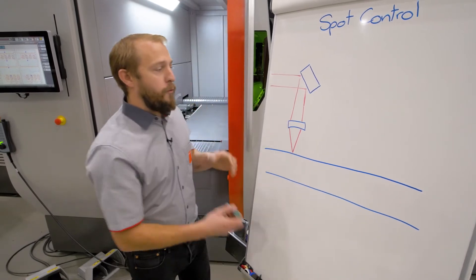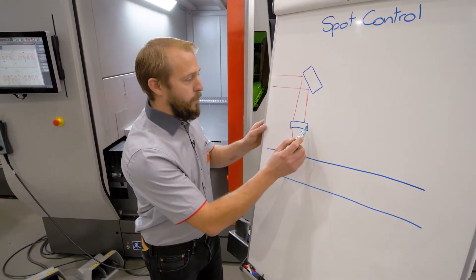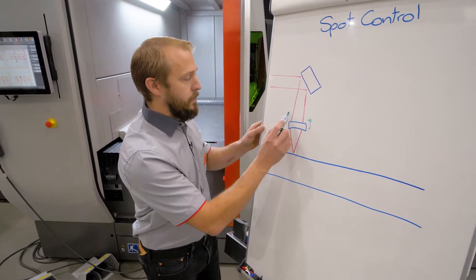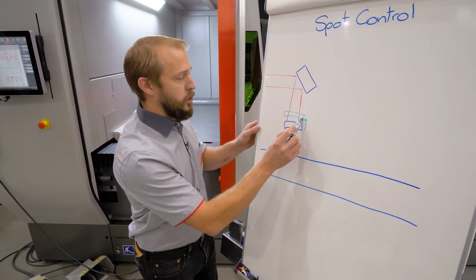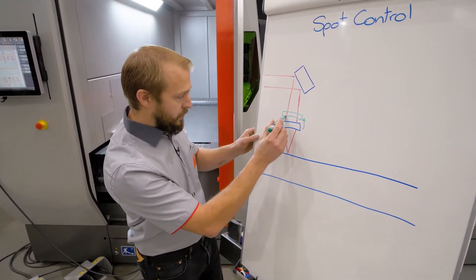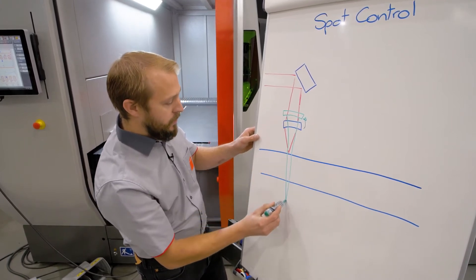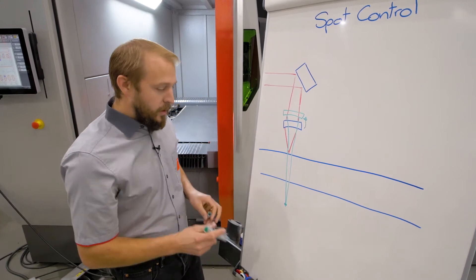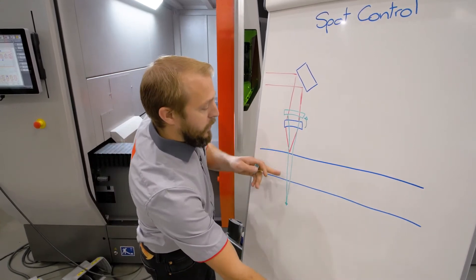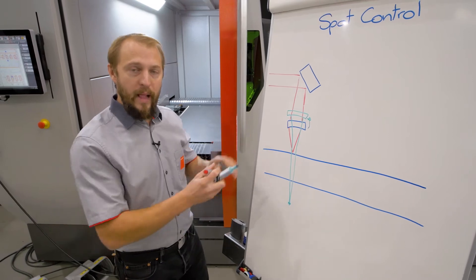So if I move my lens here up, I change the color so it's better visible, my focal spot is moving a lot down. So there is a big difference between those two focal lengths.